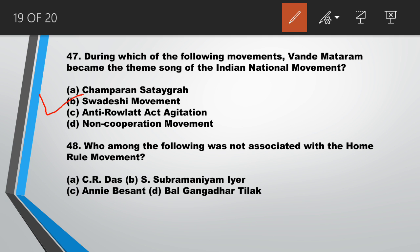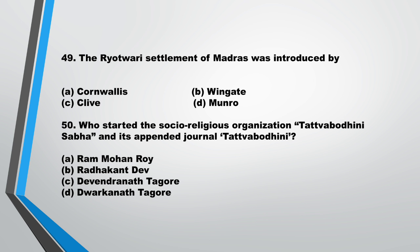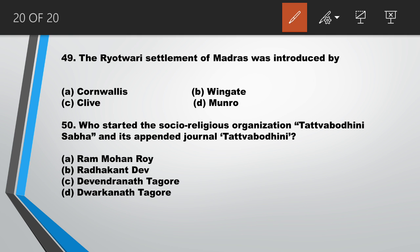Question number 48: who among the following was not associated with the Home Rule Movement? Answer is A, C.R. Das. Question number 49: the Ryotwari settlement of Madras was introduced by answer D, Munro. Question number 50: who started the socio-religious organization Tattvabodhini Sabha and its journal Tattvabodhini Patrika? Answer is C, Devendranath Tagore.